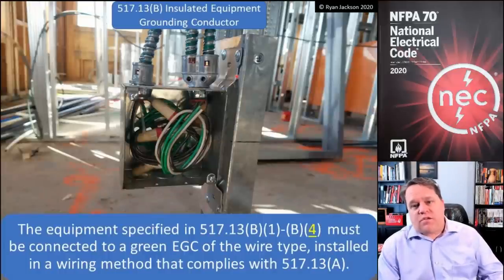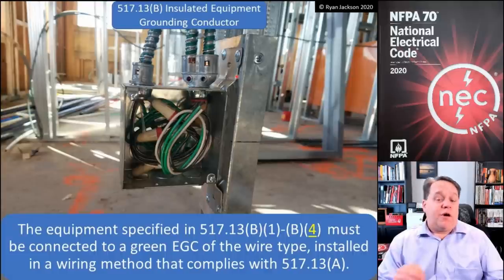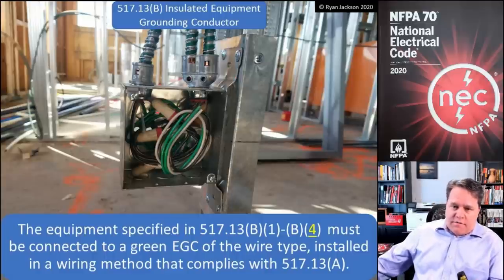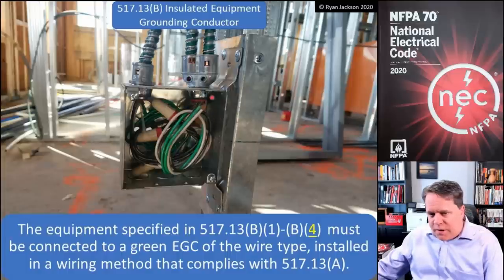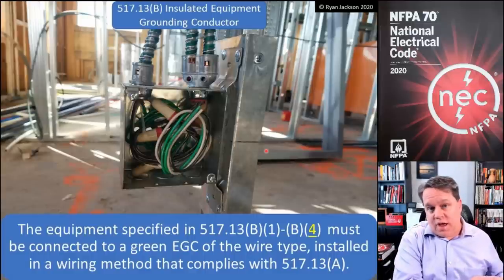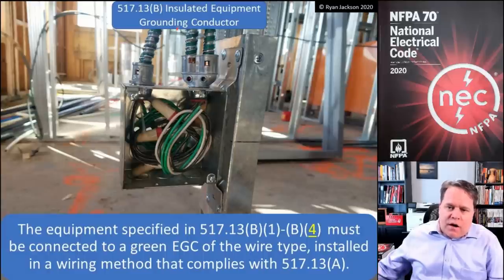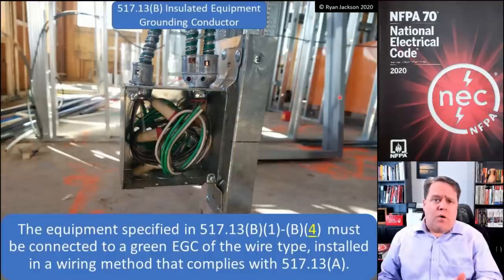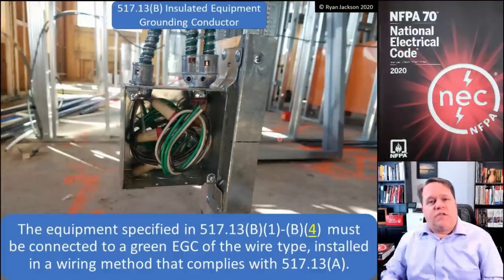Moving to section 517.13B, it talks about an insulated equipment grounding conductor. It says the equipment specified in items 1 through 4 must be connected to a green equipment grounding conductor of the wire type, installed in a wiring method that complies with A. So I have to have both: a special cable armor and a green wire inside of it. AC cable satisfies 517.13A because all AC cable has that aluminum strip, and the green wires inside satisfy 517.13B.